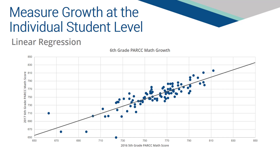Once all students across the state are plotted, we can apply linear regression. Linear regression, indicated by the gray line, establishes a projected score for the current year based on a student's prior score the previous year.